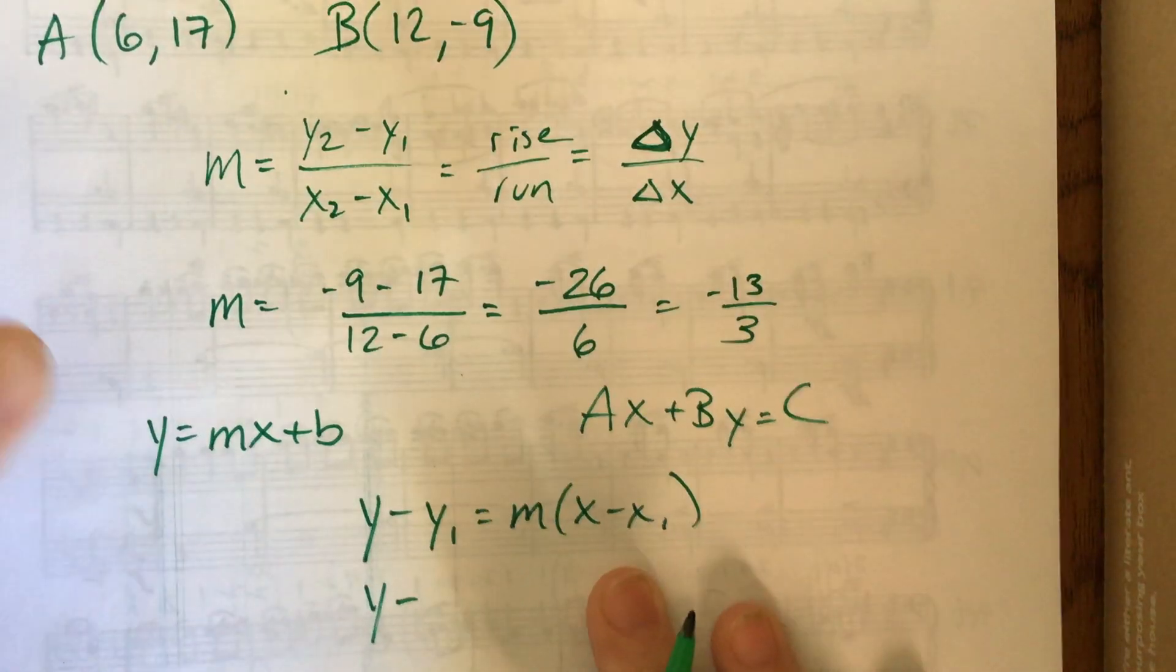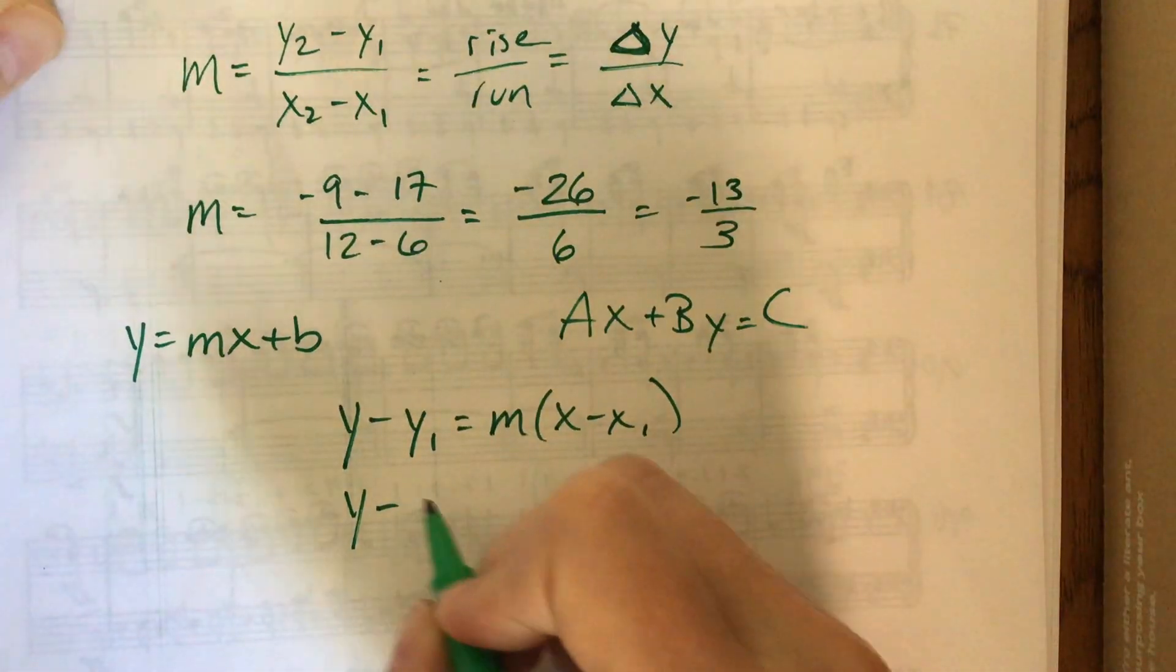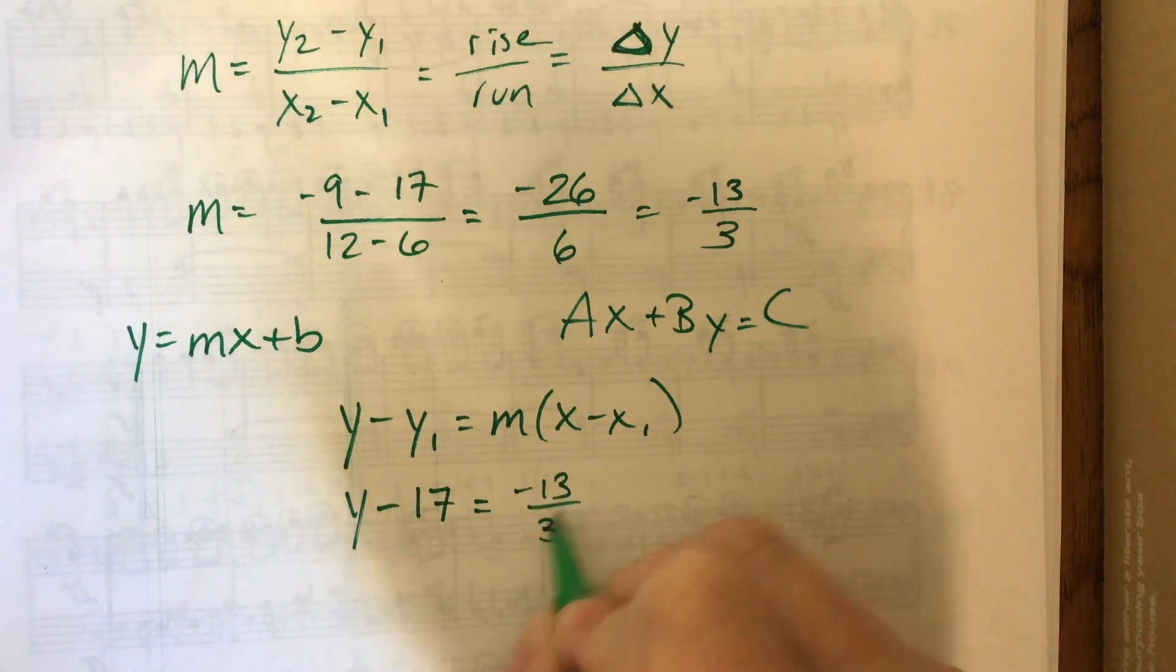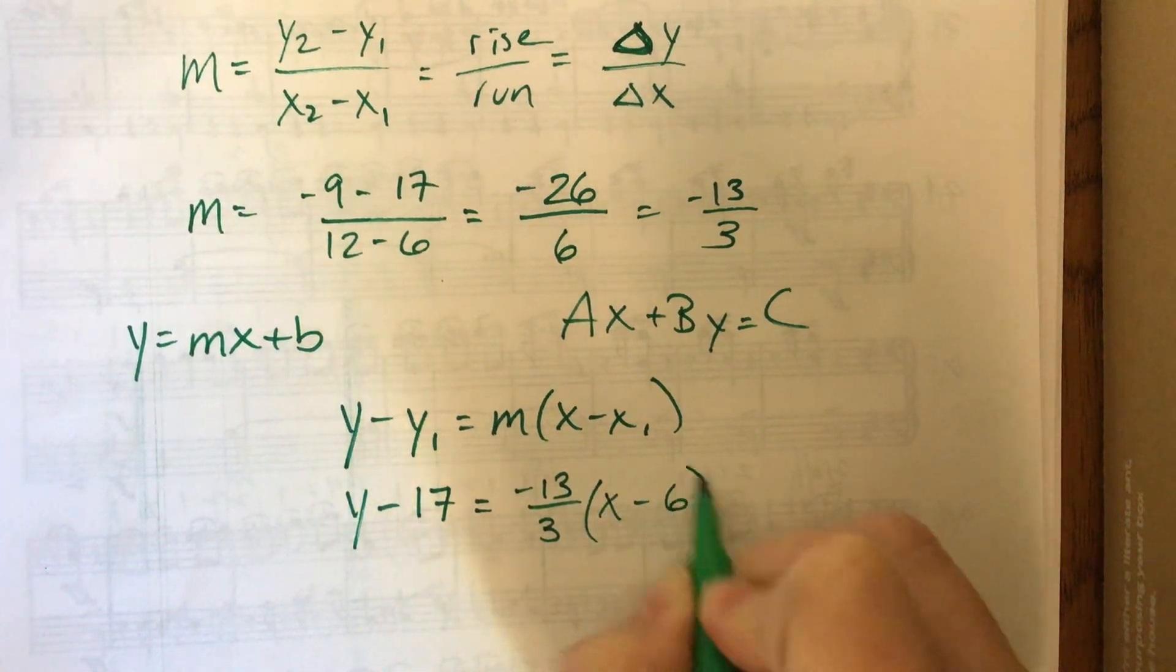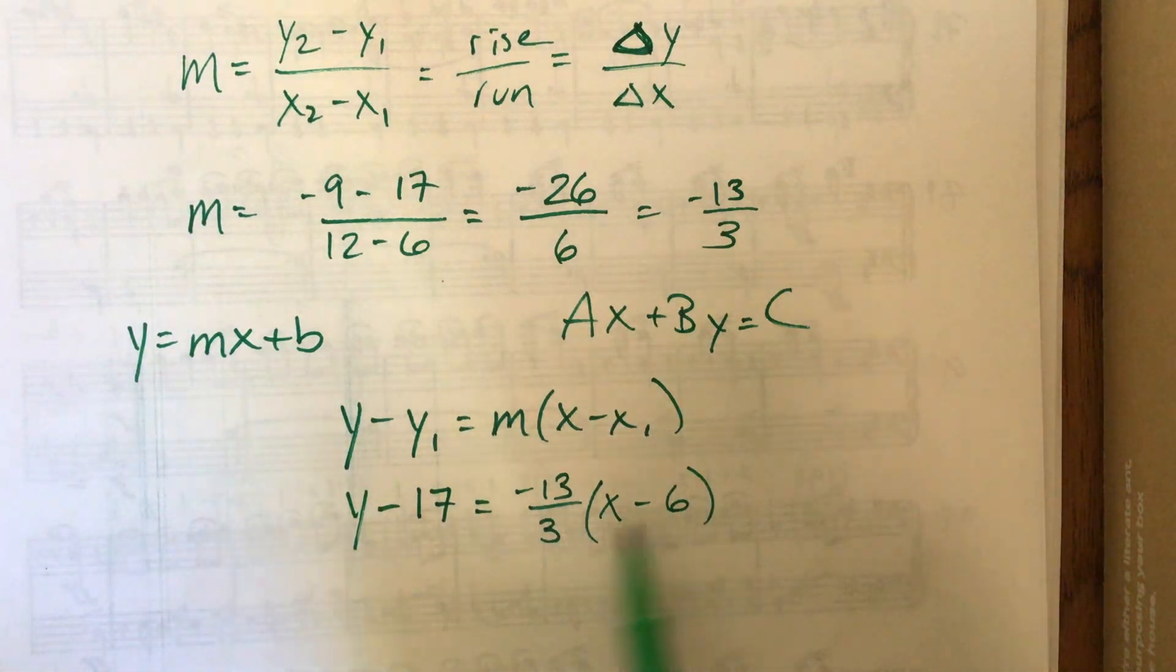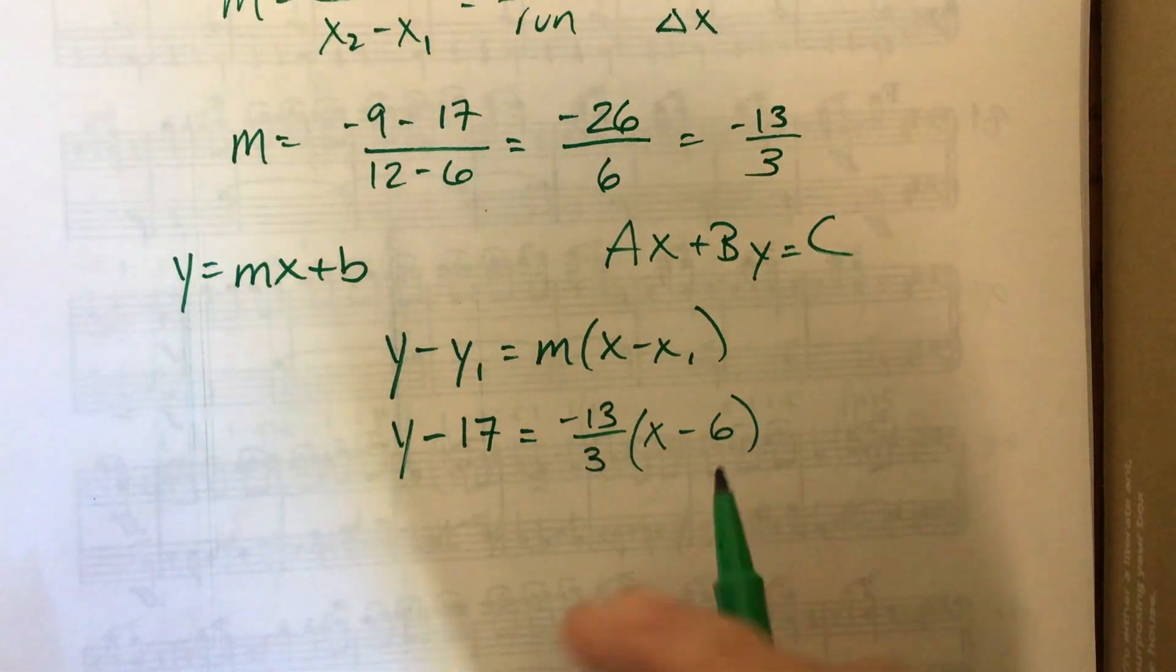I had a point, one of them was 6,17, so I can say y minus 17 is equal to negative 13 over 3 times x minus 6. Now that may or may not be a fun problem to solve. This one isn't too bad because you're dealing with values that cancel and so that cleans up. But, so feel free to continue this way and get it into whichever form you like.